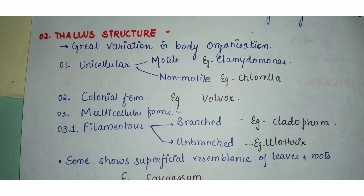Within multicellular forms is the filamentous form, where cells are arranged one above another, forming a ribbon-like filament structure. Sometimes within this main filament there are small filaments that arise from it, giving a branch-like appearance — these are called branched filamentous forms.